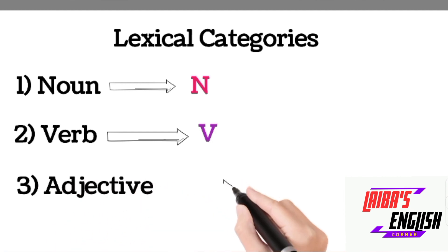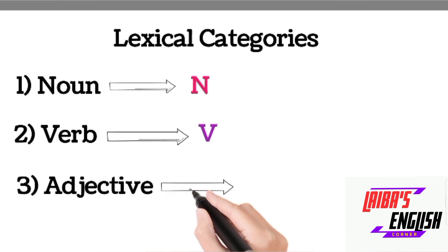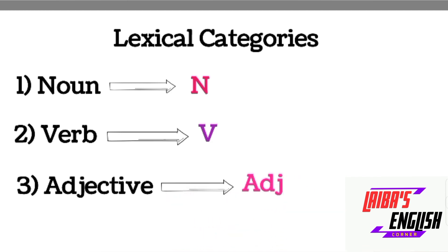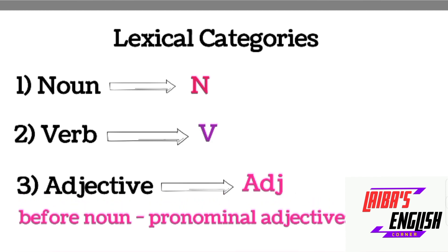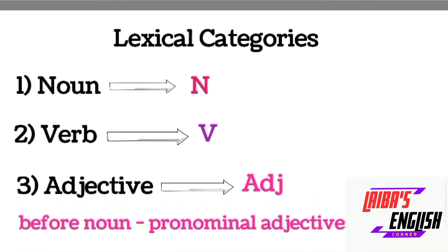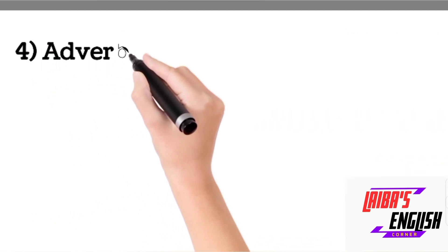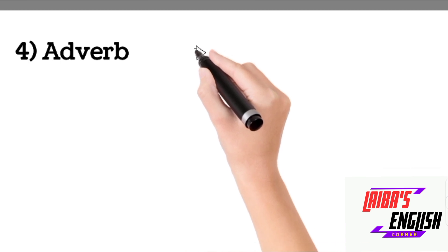The third lexical category is adjective. An adjective basically modifies a noun — for example, a blue car; here 'blue' is defining 'car,' which is a noun. An adjective will be represented by ADJ. Adjectives that come before a noun are known as pre-nominal adjectives, and adjectives that come after a noun are known as predicative adjectives.